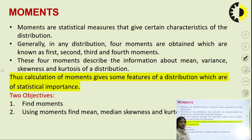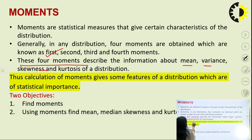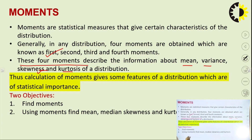Generally for any distribution, we will find four moments which are known as first, second, third, and fourth moment. These four moments will provide us some information about the given distribution like mean, variance, skewness, and kurtosis. You know very well what is mean and variance, and in the coming session you will know what skewness and kurtosis are and their statistical significance. Thus, the calculation of moments provides some important features of the distribution on the basis of which we can analyze or interpret our data statistically.